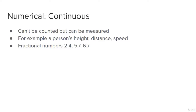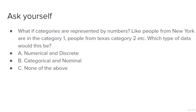Let's pause and consider a question: how do we differentiate between numerical discrete and categorical nominal data when they seem similar? For instance, what if categories are represented by numbers — people from New York are category one, people from Texas are category two? To decide, ask yourself: can we count the data, or can we measure it? Can you count the number of people living in Texas from this information? No — no such information is provided.